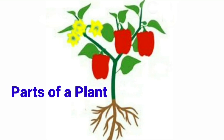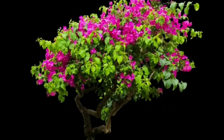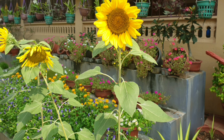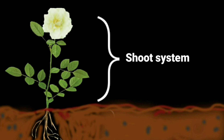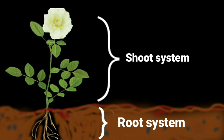Next, we are going to study about the parts of the plant. Dear children, what makes a tree stand upright? Yes, it is the shoot system of the plant. The part of the plant which grows above the soil is called the shoot system of the plant. The part of the plant which grows below the soil is called the root system of the plant.